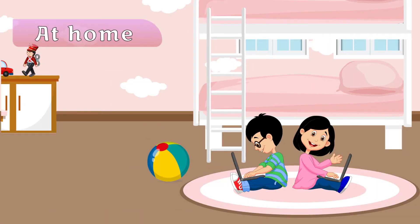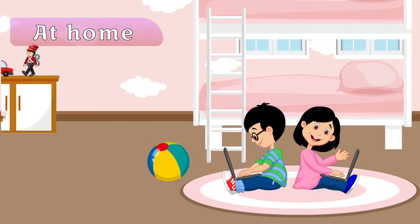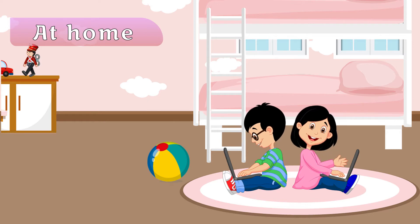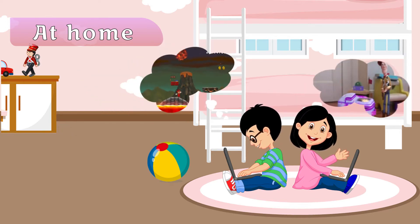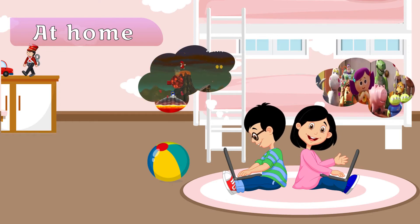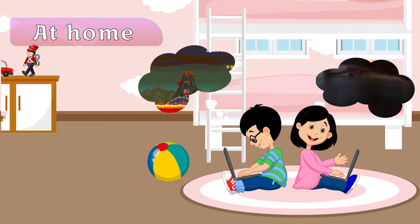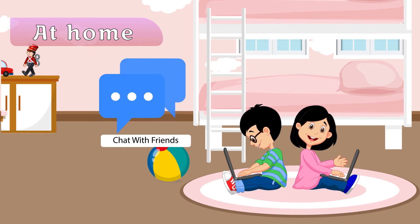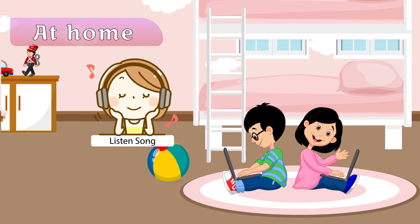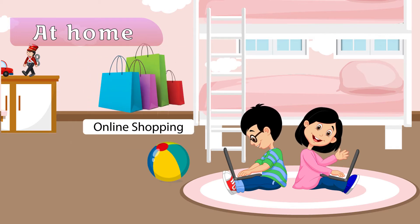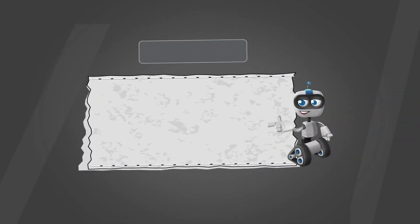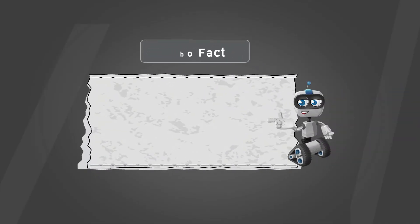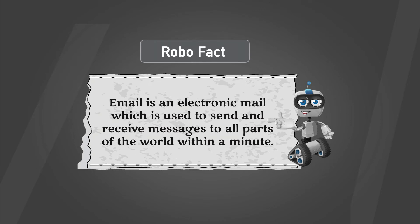At home, we can use the computer for homework and projects, games, movies, cartoons, chatting with friends, listening to songs, online shopping, bill payment. Robo fact: Email means electronic mail.